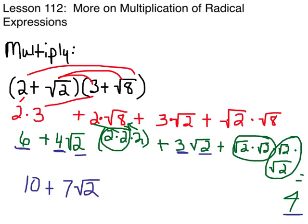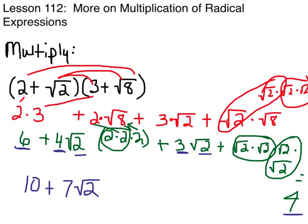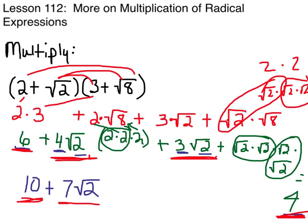So this would be square root of 2, square root of 2, square root of 2. This pair here gives square root of 2 times square root of 2 is 2, and same thing here — 2 times 2 gives you 4. Now we can combine 6 and 4, which are like terms, for 10. And then 4 times the square root of 2 can be combined with 3 times the square root of 2 for a total of 7 square root of 2. And this is our final answer, because that's as simplified as we can get it.